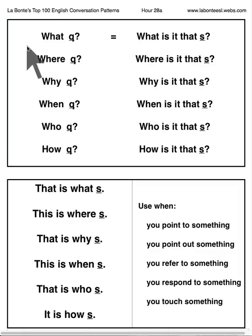We will begin with the top form. Q here is a question and S is a sentence. What did you get? What is it that you got? Where did she go? Where is it that she went? Why did you go? Why is it that you went?